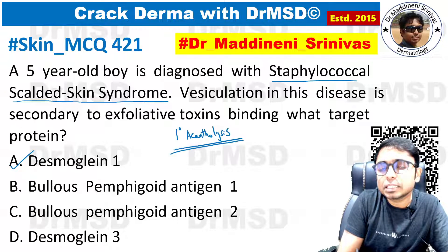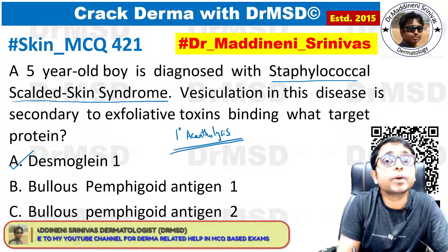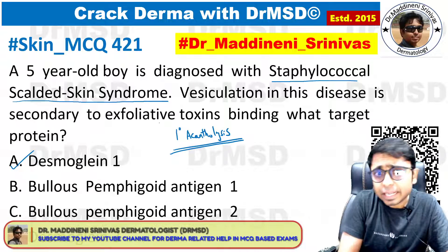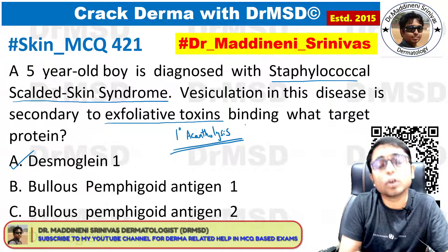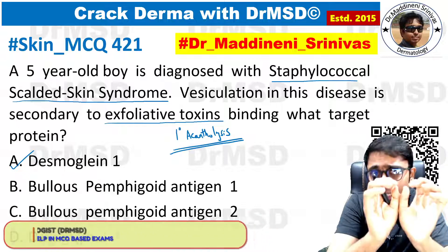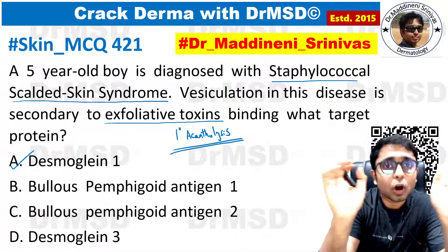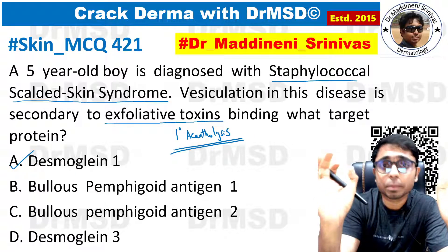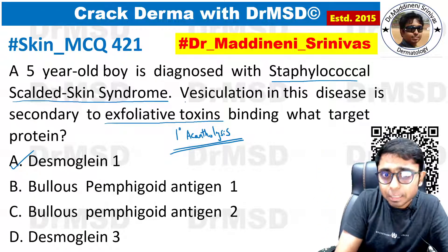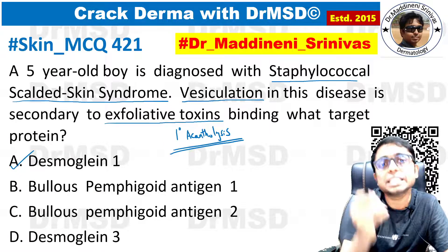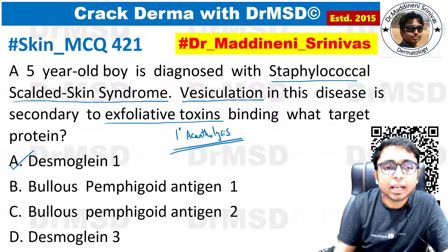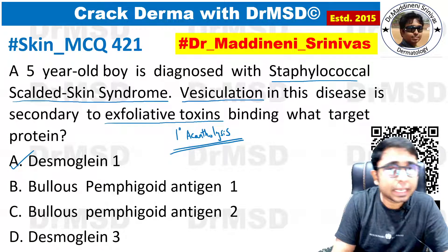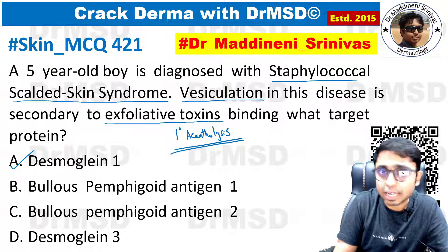Basically, there are antibodies — or in this case, exfoliative toxins — that target the desmoglins. Because of this, the connection between adjacent keratinocytes is lost, and these keratinocytes become separated from each other, producing a separation in the epidermis that is clinically seen as vesiculation.